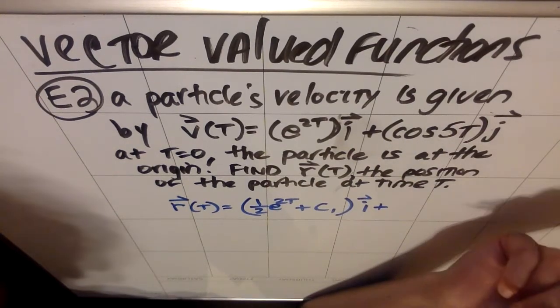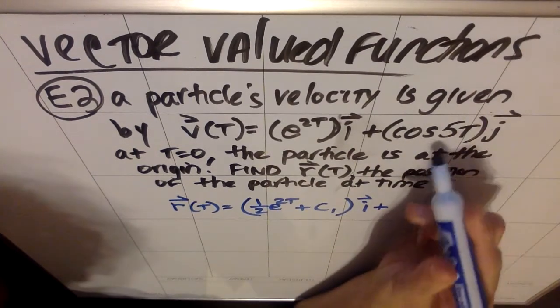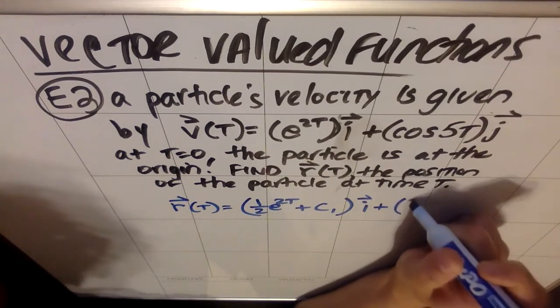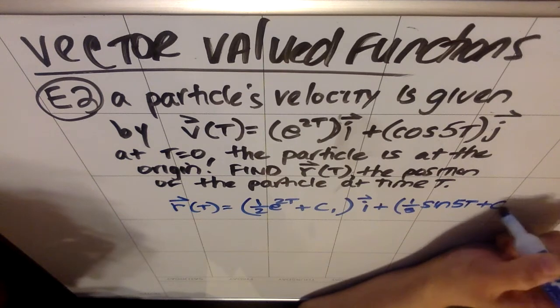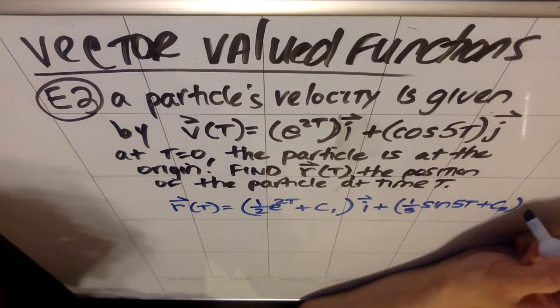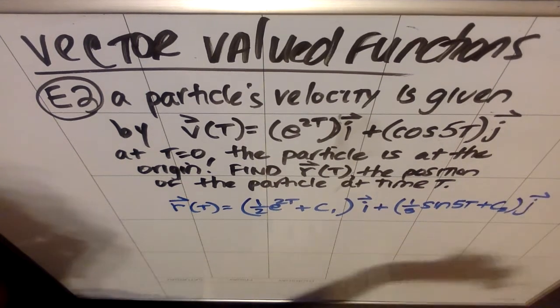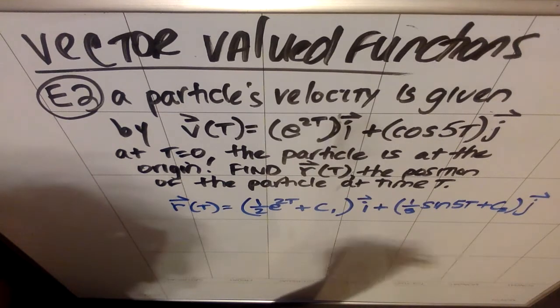Cosine of 5t, when I integrate cosine, I'm going to get sine, but because of that 5t, I'm going to end up dividing by a 5. So one-fifth the sine of 5t, right, plus some c sub 2. They're not necessarily the same c in the j direction, right? So that's my position vector.